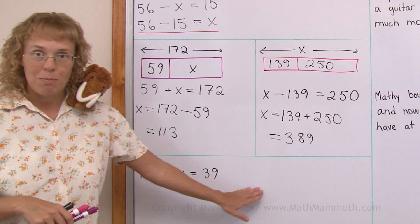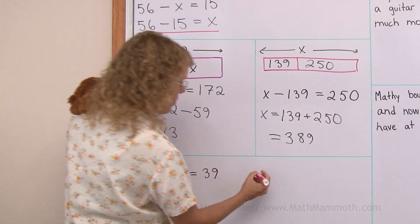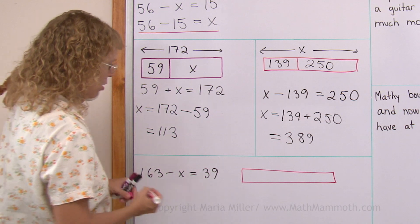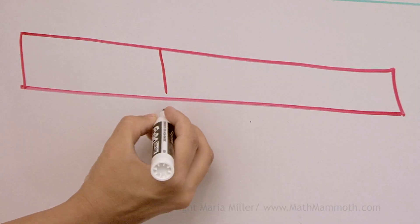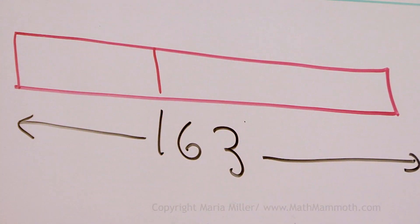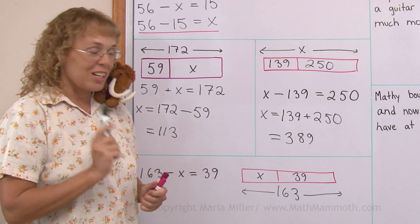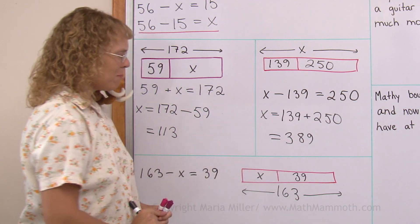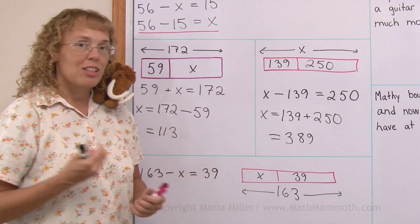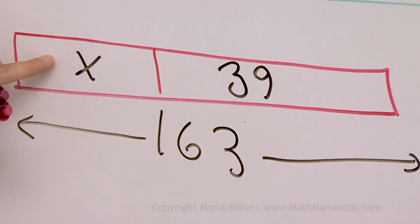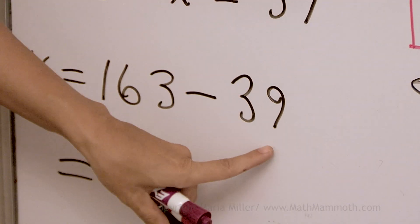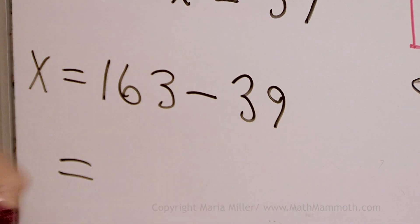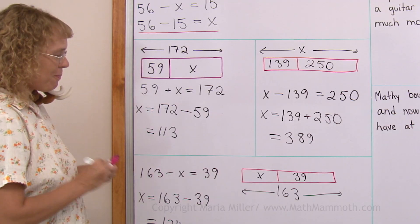Let's do the same here — draw a bar model to match this equation. There are going to be two parts again. Subtraction starts with the total, so 163 is our total length of this bar, and x and 39 are the parts. This model is just to help you think. To find x, take the total and subtract 39. So x equals 163 minus 39. You can subtract 40 and then add one back in, so we get 124.